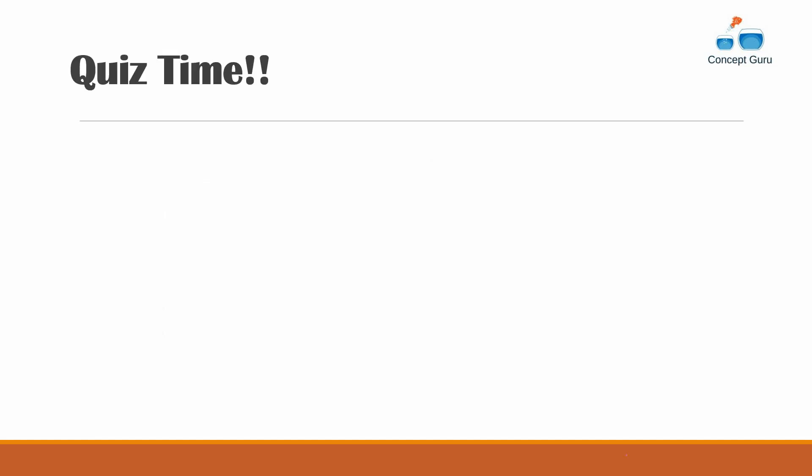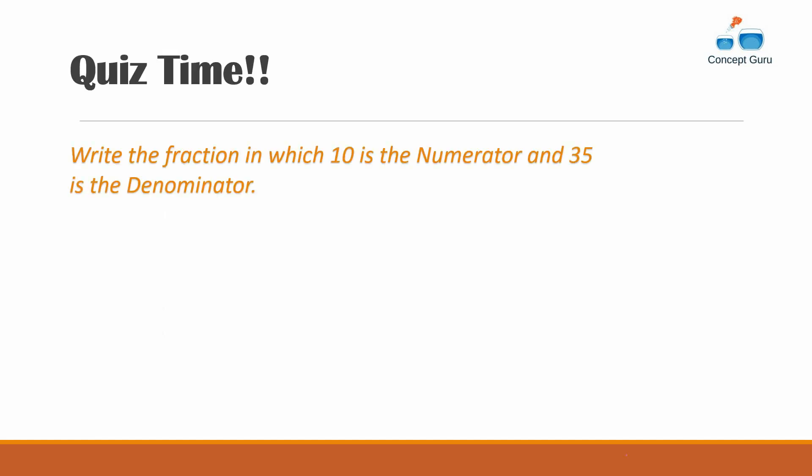Let's quickly check how much we've learned. Can you write the fraction in which 10 is the numerator and 35 is the denominator? You can pause the video and write it on a piece of paper. The answer is 10 by 35 — great job if you got that correct!